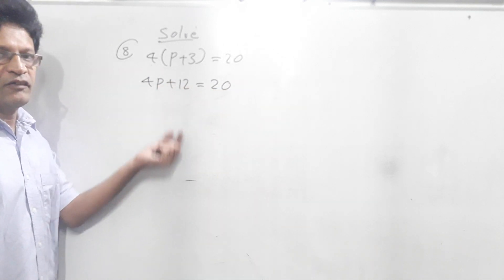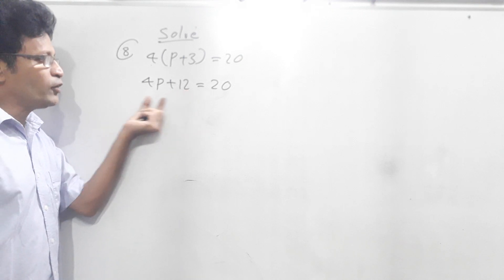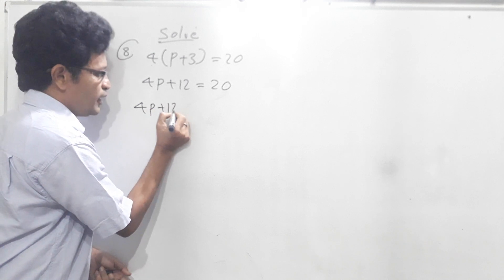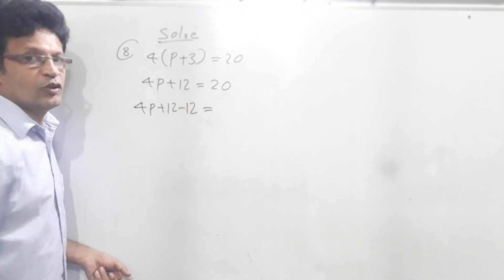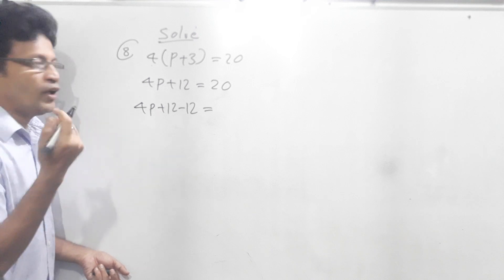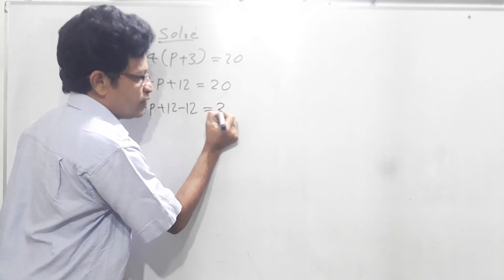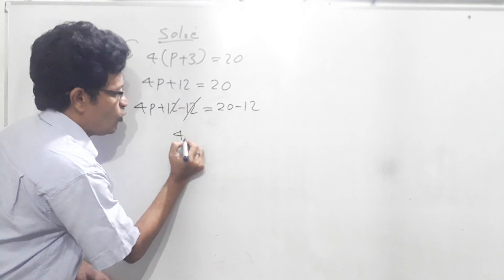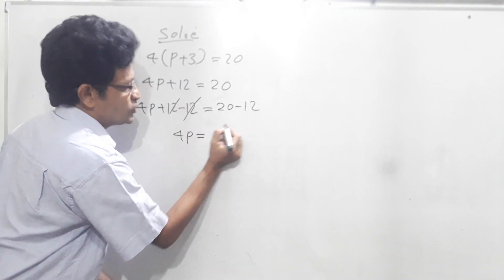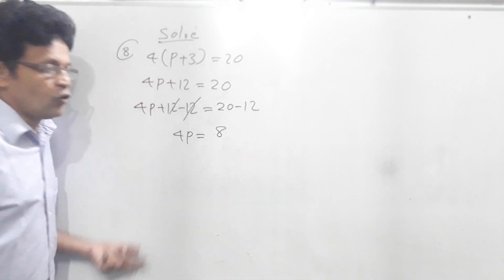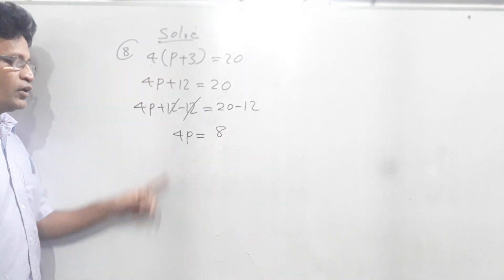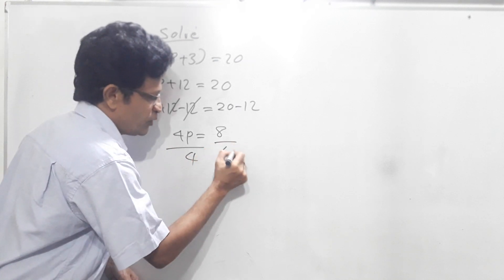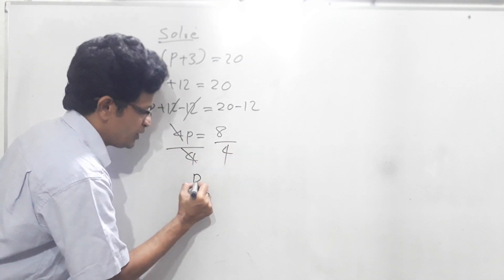Now we have to get rid of this 12. To get rid of this 12 we have to subtract 12 from this side. Then 4p plus 12 minus 12; from the other side also we have to subtract 12, so 8 minus 12. Plus 12 and minus 12 cancel. So 4p equals 8 minus 12 is minus 4. Now what we have to do is divide this side by 4, then 4 and 4 cancel. p equals minus 4 divided by 4, which is minus 1.